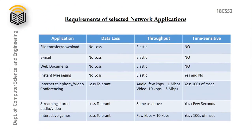Requirements of selected network applications: File transfer, email, web documents, and instant messaging are loss-sensitive applications requiring no data loss. They are elastic in nature, meaning they can cope with available throughput and are not time-sensitive. Video conferencing, internet telephony, audio-video streaming, and live gaming are loss-tolerant — minimum data loss can be tolerated — and require some fixed throughput (e.g., a few kbps). They are also time-sensitive, meaning data must be received within a minimum time.